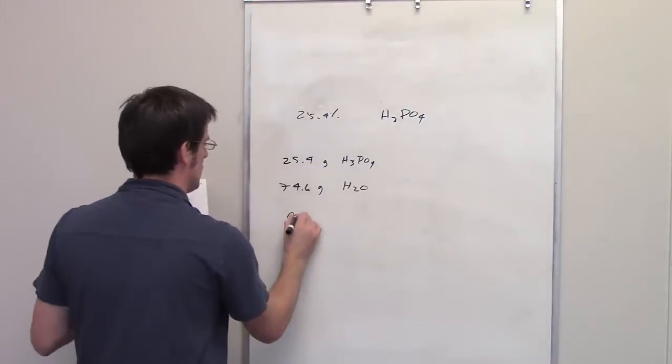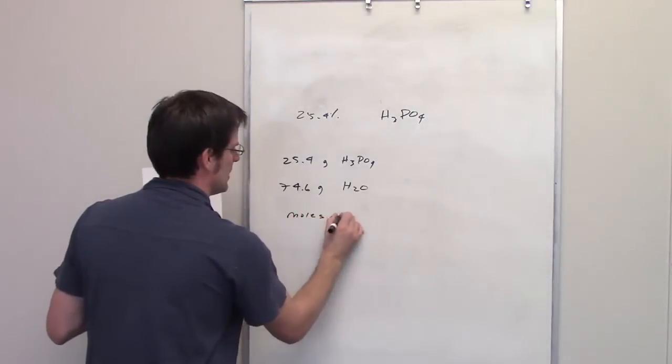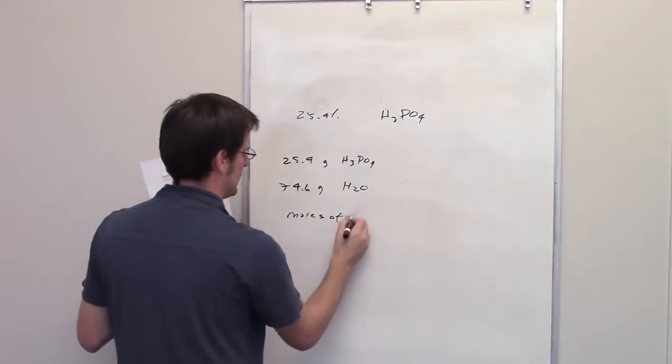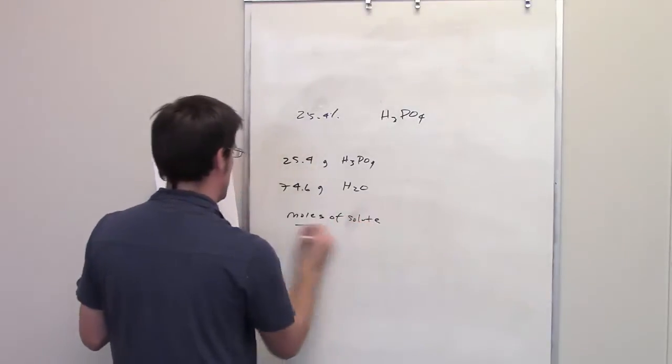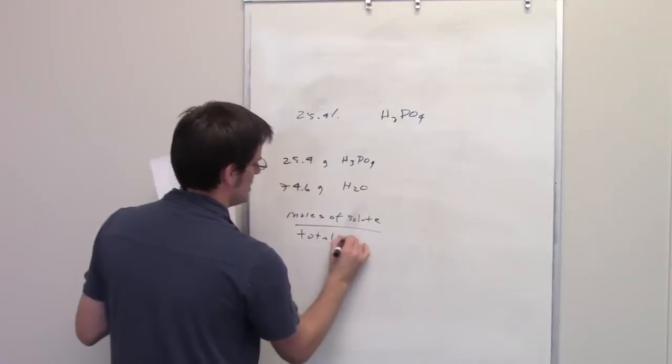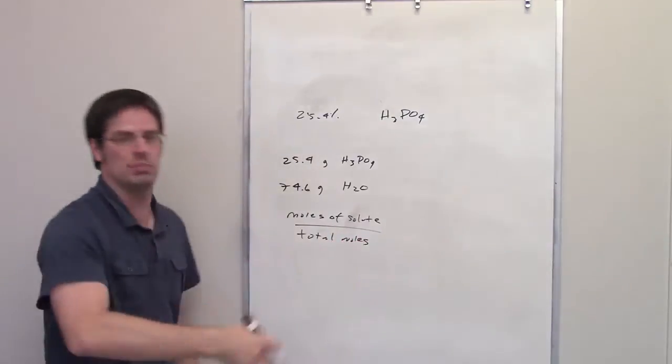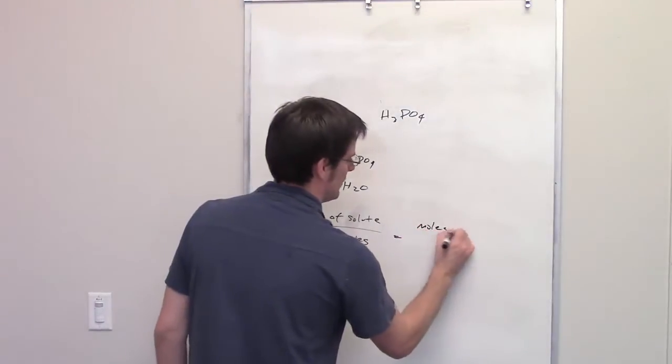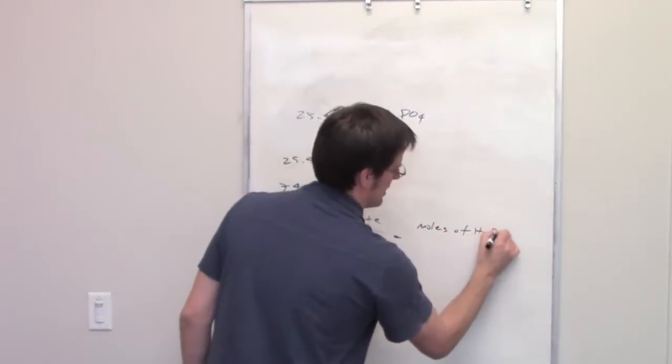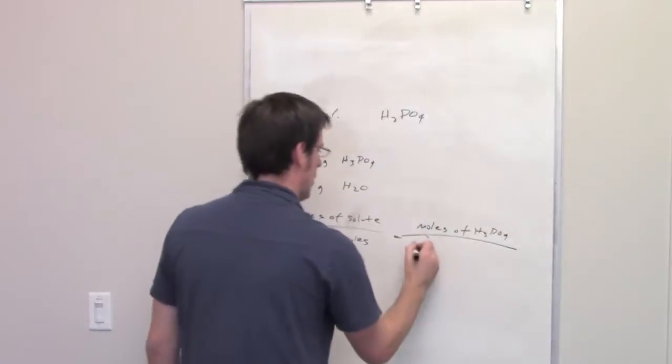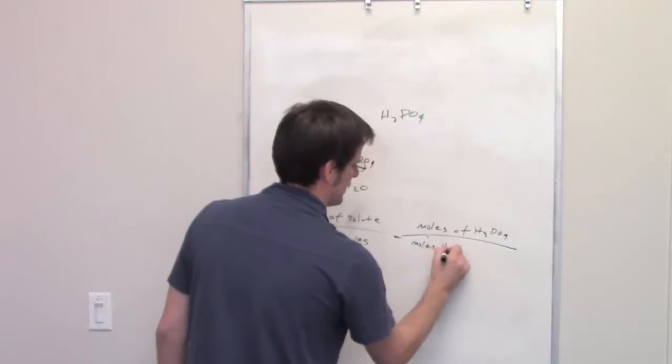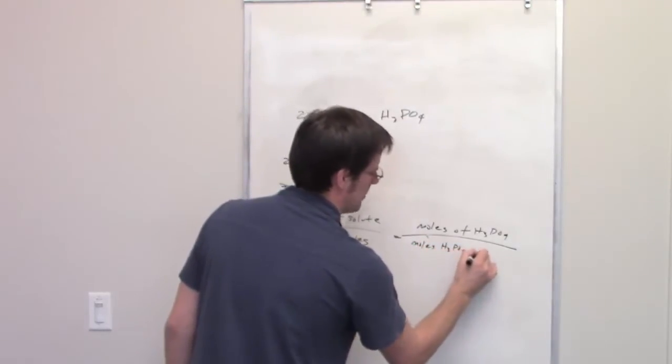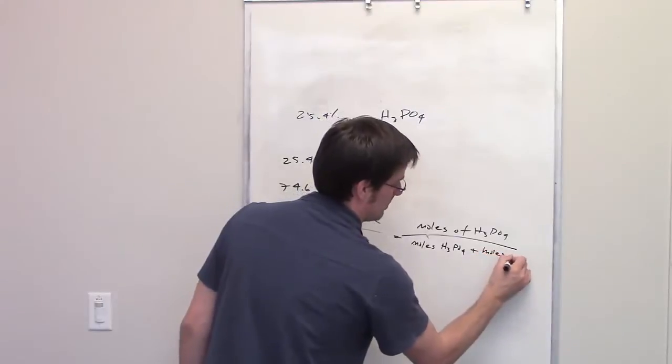Mole fraction is moles of solute divided by total moles. Total moles is going to be moles of solute plus the moles of the solvent. In this case, we're going to do moles of phosphoric acid divided by moles of phosphoric acid plus moles of water, and that's pretty much it.